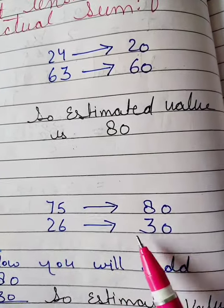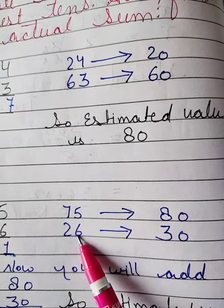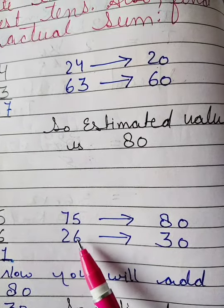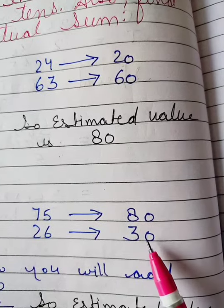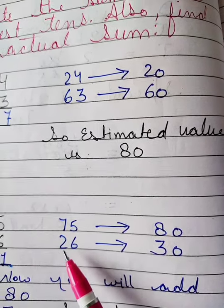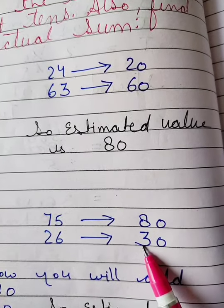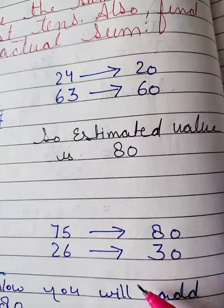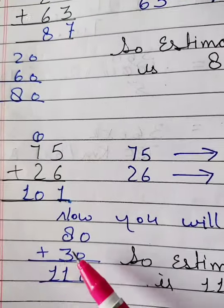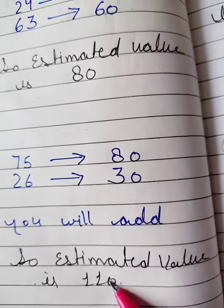And here is 26. You will write 30 because ones digit 6, now you will increase 1 in 2, so 2 plus 1, here you will write 30. So students now you will add this 80 and 30. Your answer is 110. So your estimated value is 110.